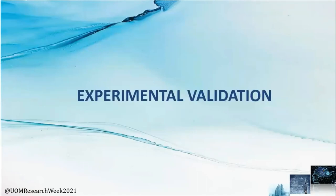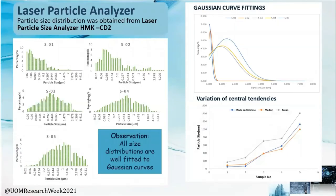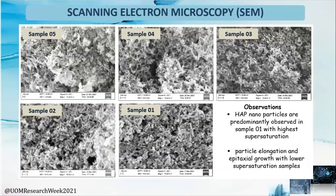Finally, we did our experimental validation as shown in the slide. In the laser particle analysis results, as expected, we obtained the narrowest particle size distribution for sample number one and the broadest distribution for sample number five. There are narrower and smaller particles for sample number one — confirmed by the same analysis. Sample number five has the largest particle size compared to the smallest size of sample number one.